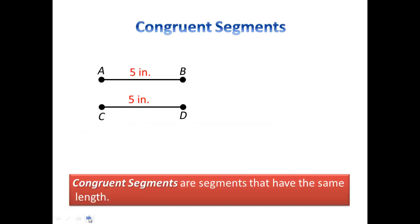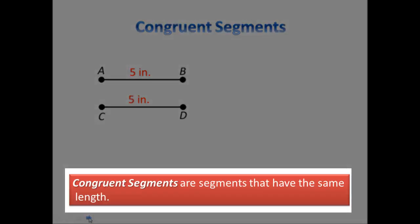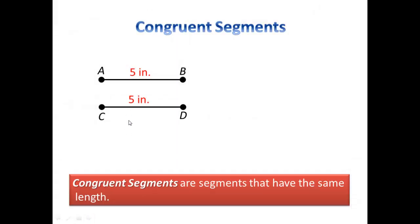Now let's talk about congruent segments. First, the definition: congruent segments are segments that have the same length. Looking at this diagram, AB is congruent to CD because they both have a length of 5.